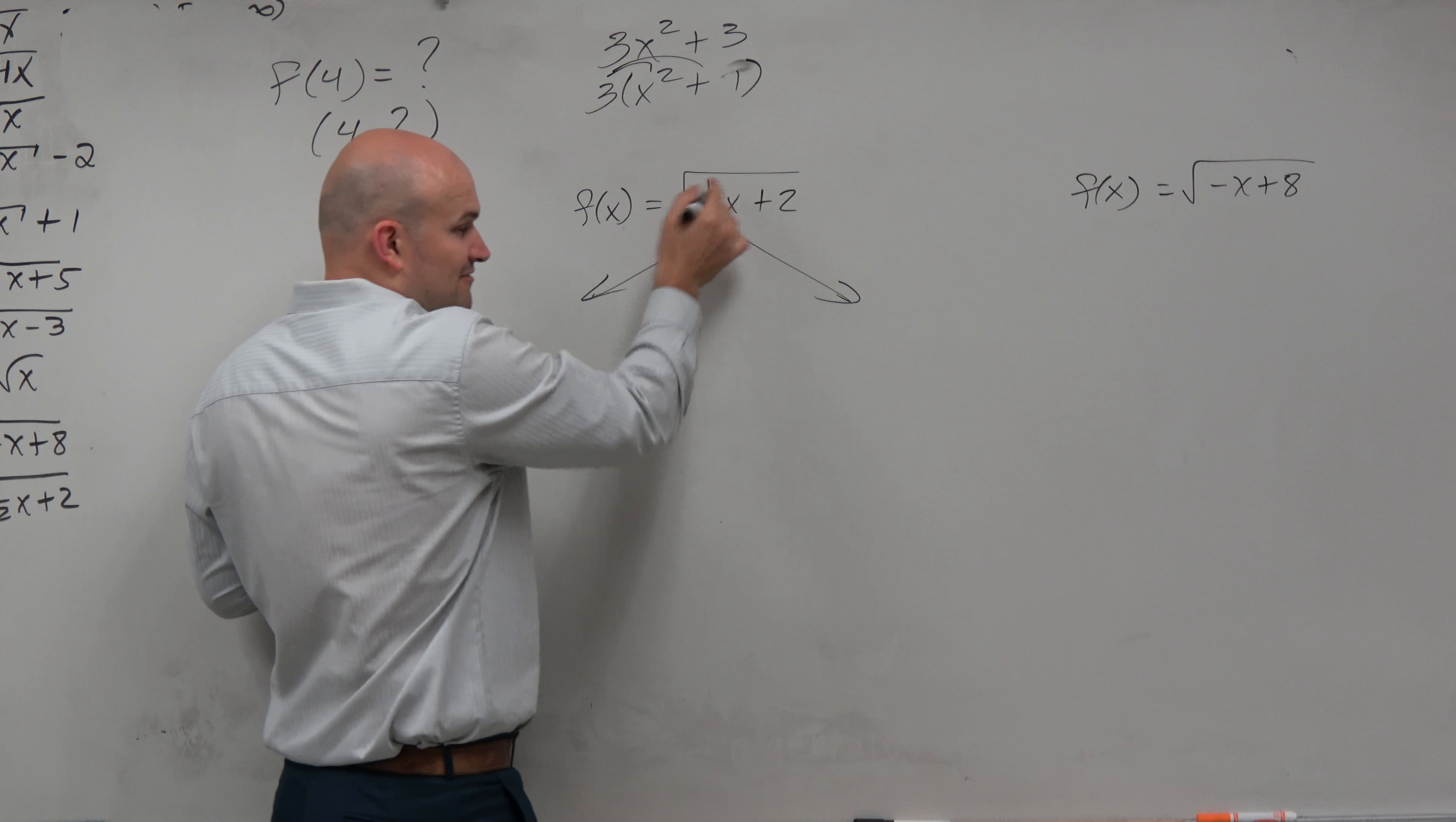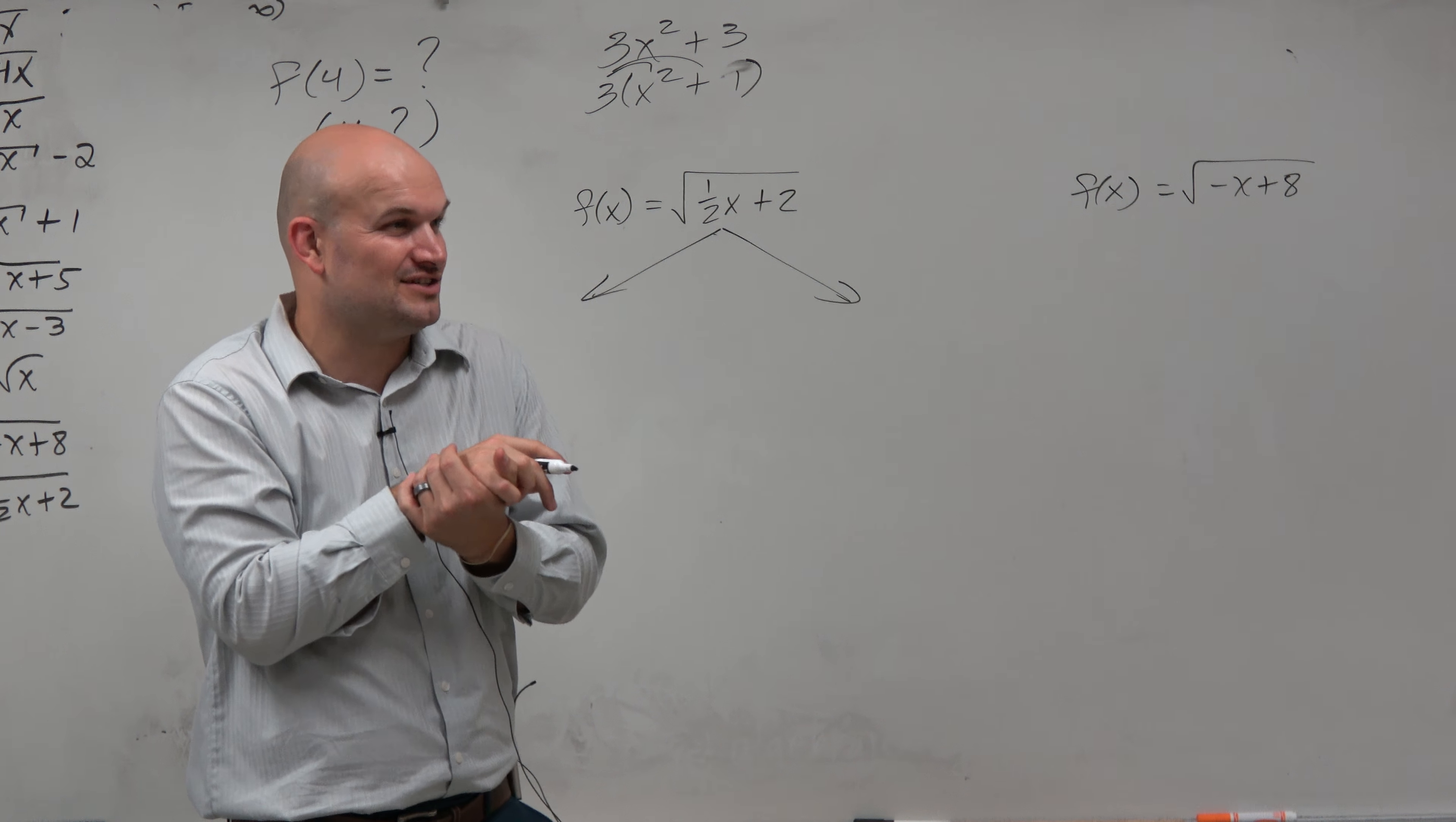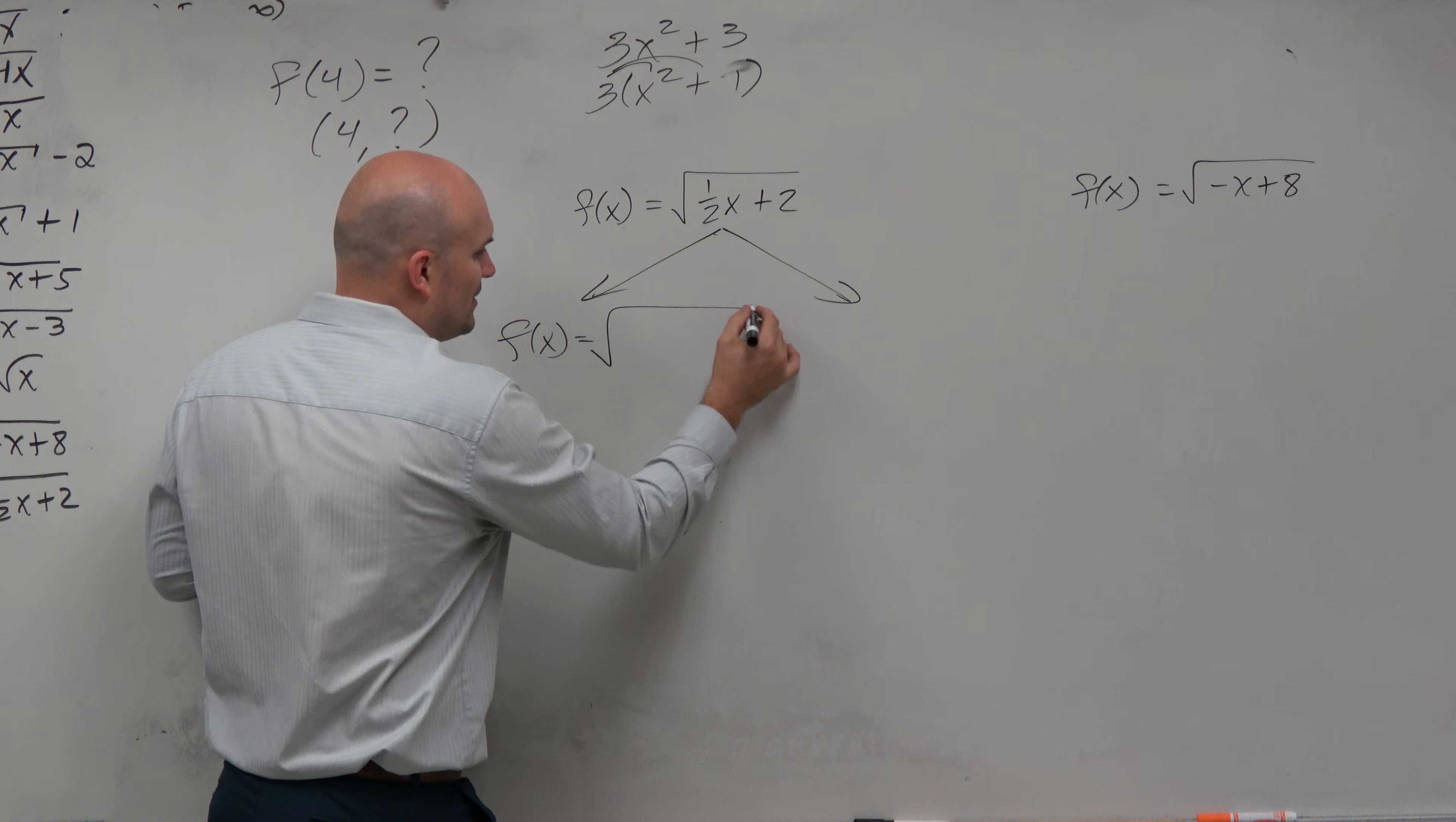So if I want to rewrite this by factoring out, I've got to factor out a 1 half. And some of you are like, I don't know how to factor, I can factor out the 3, but 1 half makes it a little bit difficult. But again, think about this guys - factoring out the 1 half is kind of like dividing out the 1 half.